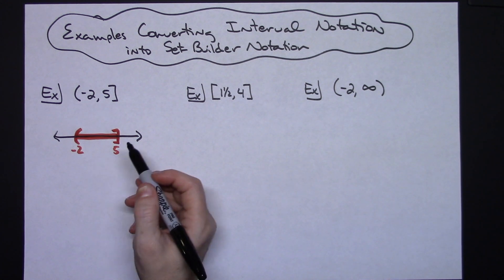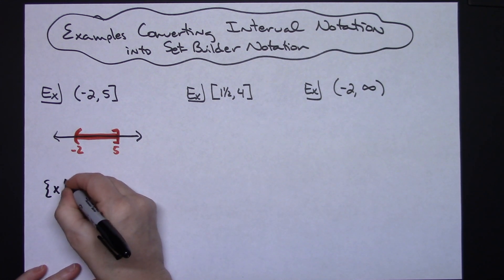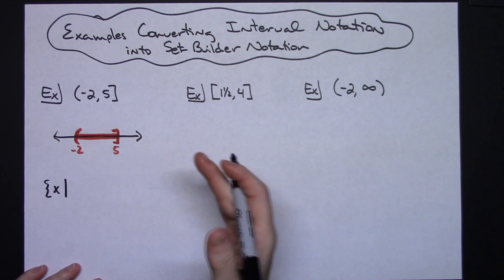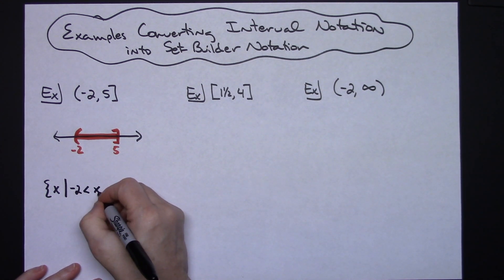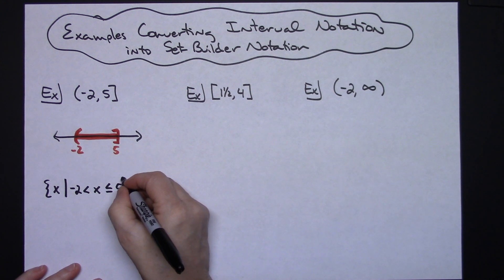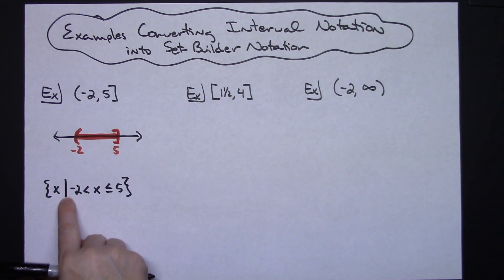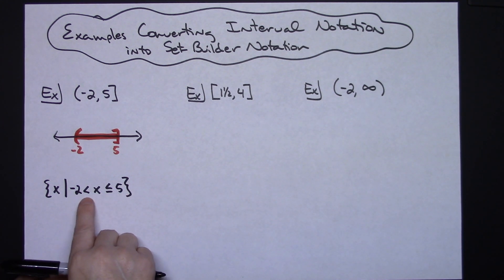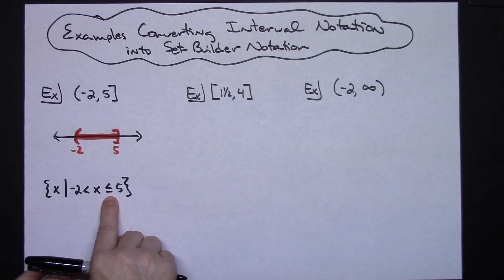For the set builder notation, you have your set brackets — the set of all x such that x is between negative 2 and 5. Writing that left to right using only less than or less than or equal to signs, we have: negative 2 is less than x is less than or equal to 5. The curvy bracket means negative 2 is not included, so we use a strict less than. The square bracket means 5 is included, so we use less than or equal to.